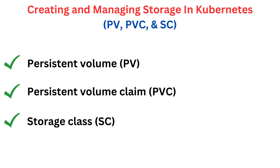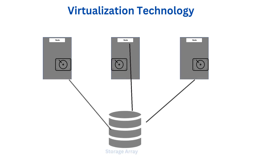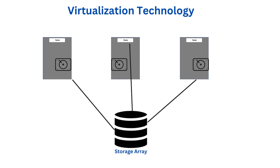If you're familiar with virtualization technology for enterprise environments, you would understand that the ideal practice when configuring storage is to use external storage, be it in the form of SAN, NAS, NFS, or any other external storage, to store your data for persistency, consistency, and high availability — instead of using the local storage where your VM resides. And this same thing is applicable in Kubernetes and OpenShift.